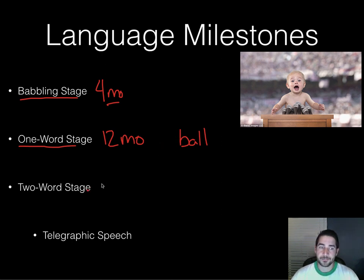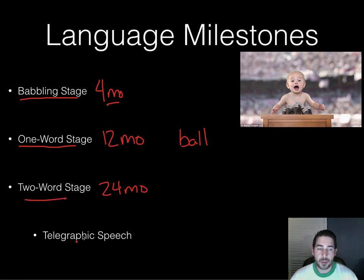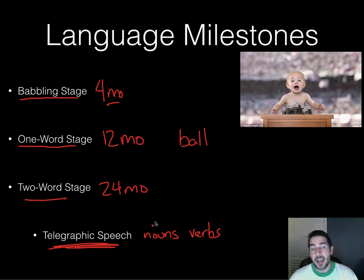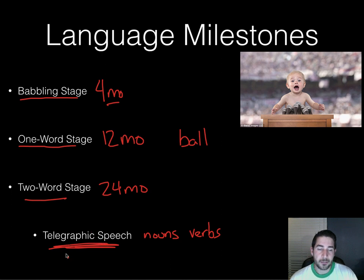At about 24 months, you enter the two-word stage, which includes telegraphic speech. Telegraphic speech is mostly nouns and verbs — you might say 'car fast' or 'dog scary.' So telegraphic speech strips language down to its essential content words.